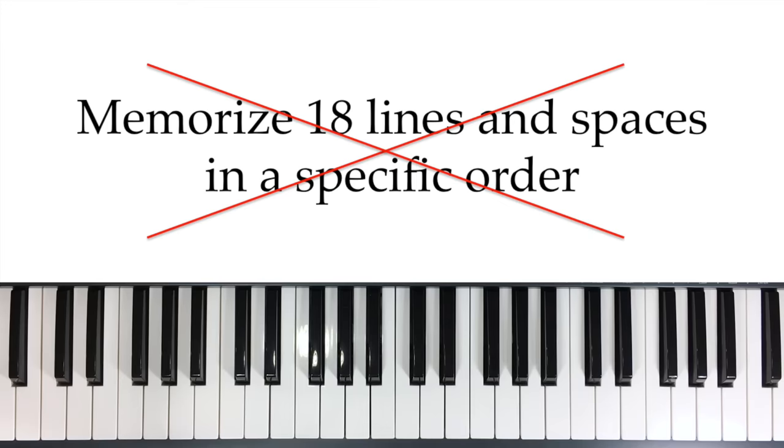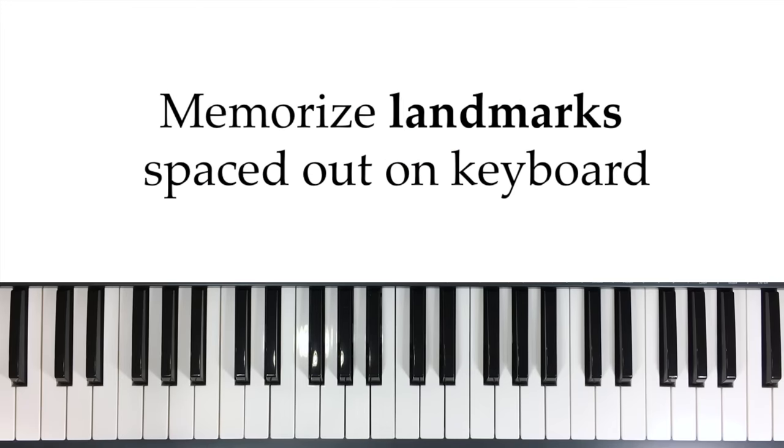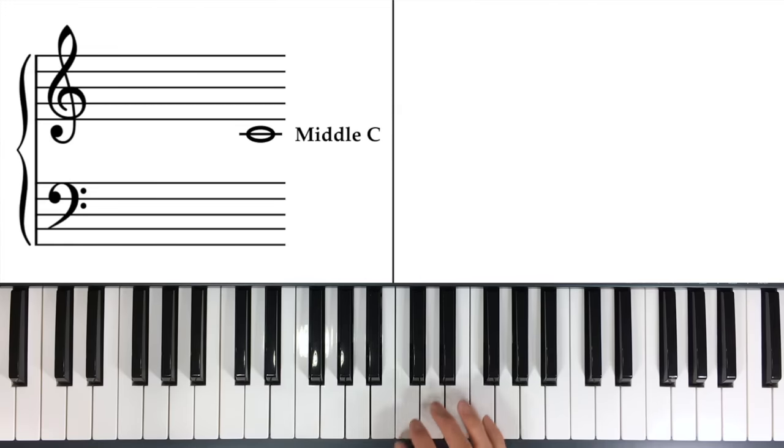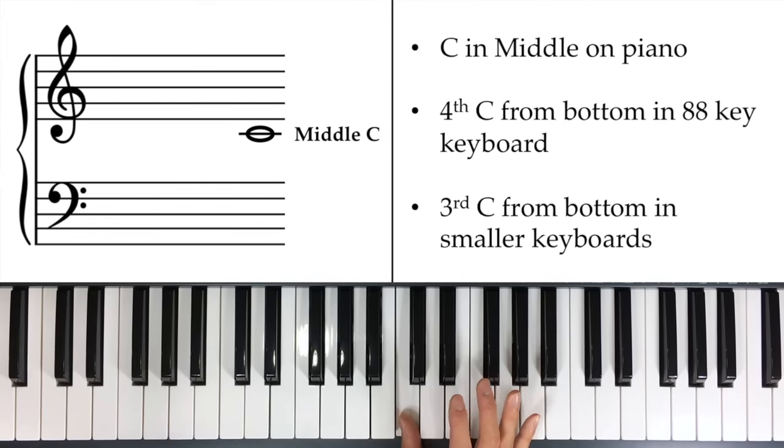Instead of memorizing 18 lines and spaces in a specific order, memorize just a few landmarks evenly spaced across the keyboard. So our first landmark in the music is middle C, right here. So middle C is the C in the middle of your piano. It's the fourth C from the bottom of an 88 key keyboard, and the third C from the bottom on smaller sized keyboards.